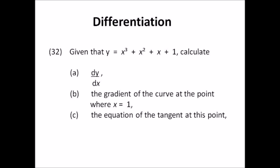Number thirty-two: differentiation. Given y equals x³ plus x² plus x plus 1, calculate: a) dy/dx; b) the gradient of the curve at the point where x equals 1; c) the equation of the tangent at this point. For part c, remember the formula y minus y₁ equals m times (x minus x₁). Finding dy/dx is straightforward; substituting x equals 1 for the gradient is also straightforward.